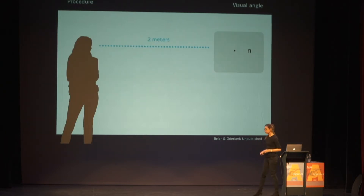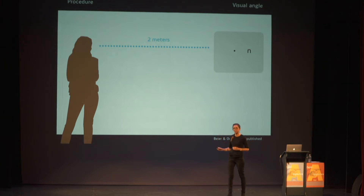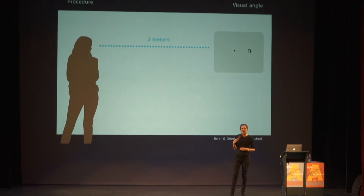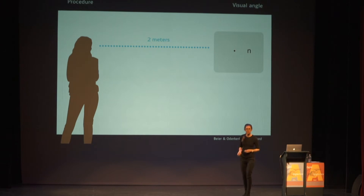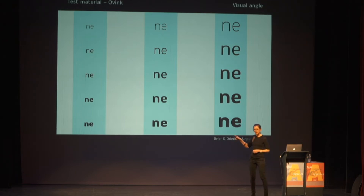So what we did was we tested 20 people, had them stand at 2 meters distance, with single exposures of letters slightly out in the peripheral visual field. The task was for the participant to say out loud what kind of letter they thought they saw. We tested different weights — small, medium, and large sizes. These were the test fonts.